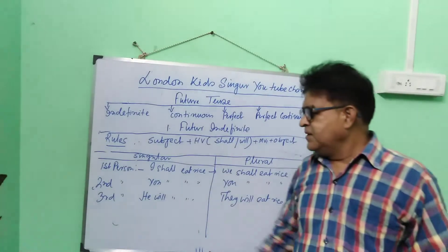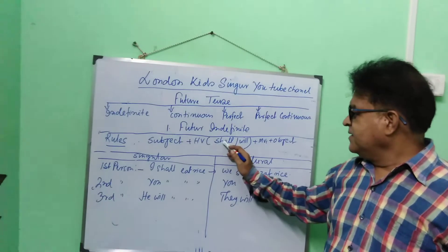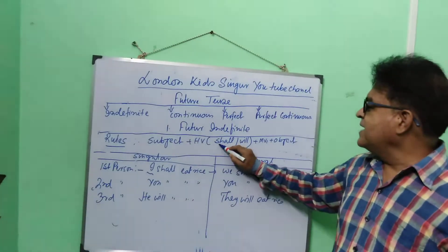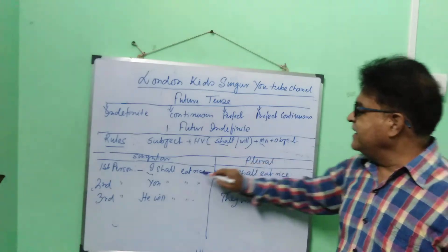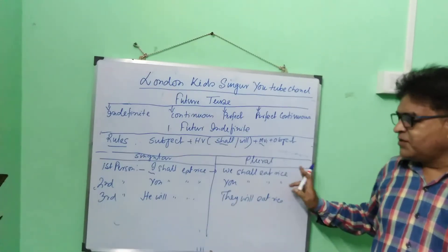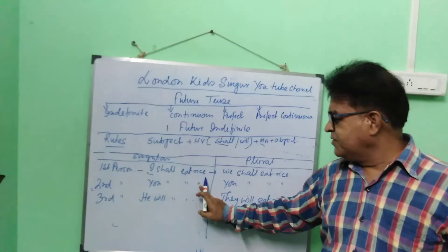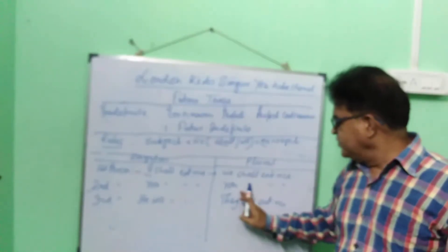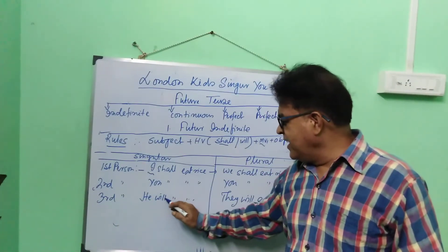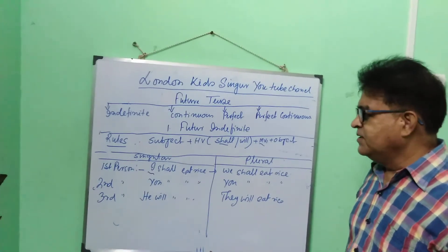Take an example. First person singular: I shall eat rice. First person plural: We shall eat rice. Second person singular: You shall eat rice. Second person plural: You shall eat rice. Third person singular: He will eat rice. Third person plural: They will eat rice.